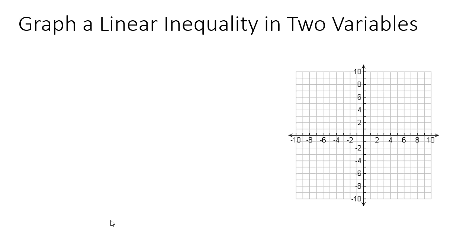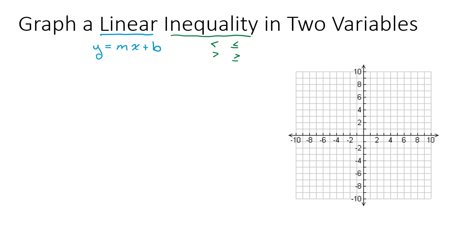In this video, we're going to look at how to graph a linear inequality in two variables. First, let's think about what these words mean. When we talk about a linear equation, we're talking about an equation that can be placed in the form y equals mx plus b, whose graph is a line. When we're talking about an inequality, we're talking about less than, less than or equal to, greater than, or greater than or equal to. So a linear inequality is going to have one of these inequality symbols instead of an equal sign.